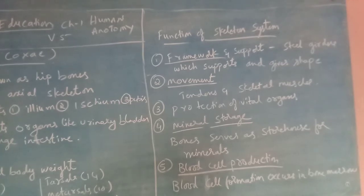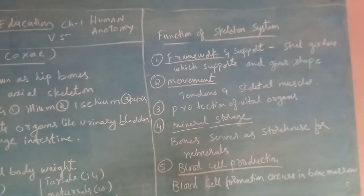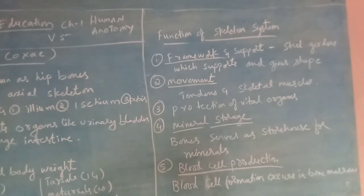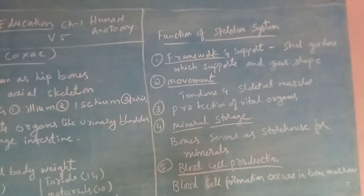Finally, from the bone marrow, blood cells are formed — the secretion of blood cells happens in the bone marrow. These are the main functions of the skeletal system. Next we will see the classification of different types of joints.